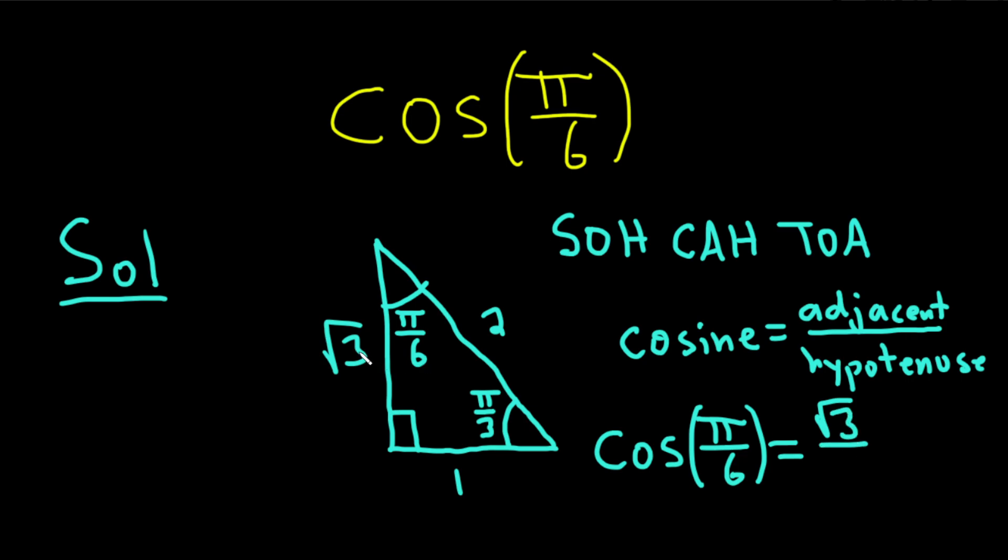And then the hypotenuse, its length is 2. That would be the answer. So it's just the adjacent side over the hypotenuse. Pretty cool. This is equal to the square root of 3 over 2.